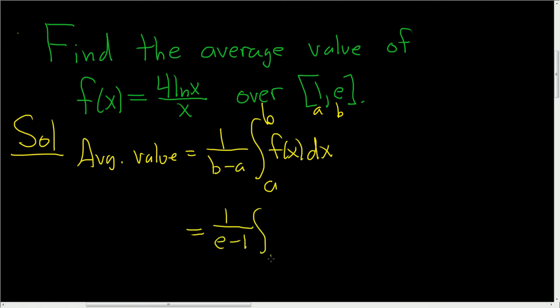And we said a was 1, and b is e. And then f of x is 4 natural log of x over x with respect to x.